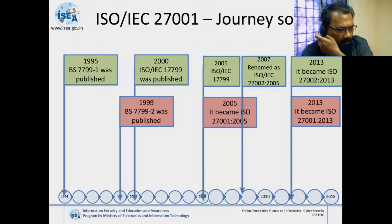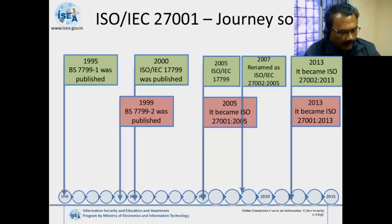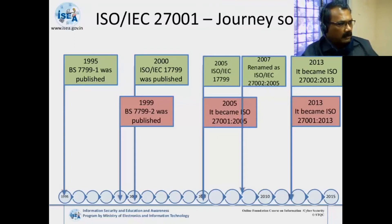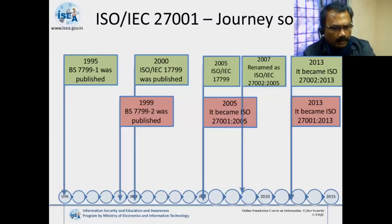So the journey is: in 1995, BS 7799 was introduced and published, and organizations went for certification based on that. Part 2 is not for certification — it is a code of practice which gives you objectives and controls to meet the requirements of BS 7799 Part 1. Similarly, ISO 27001 gives you the organizational requirements needed to go for ISMS certification, and how those requirements will be fulfilled is given in ISO 27002.